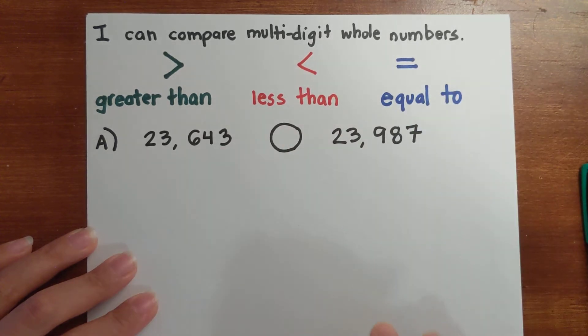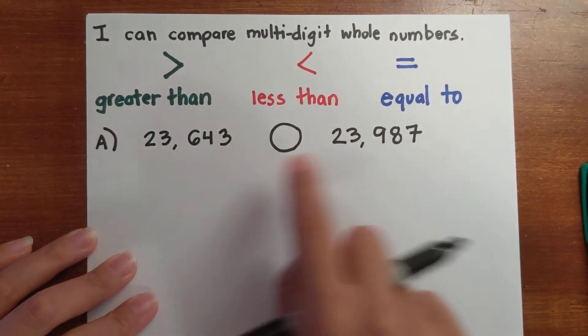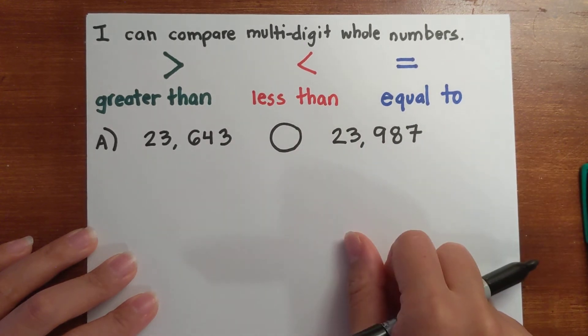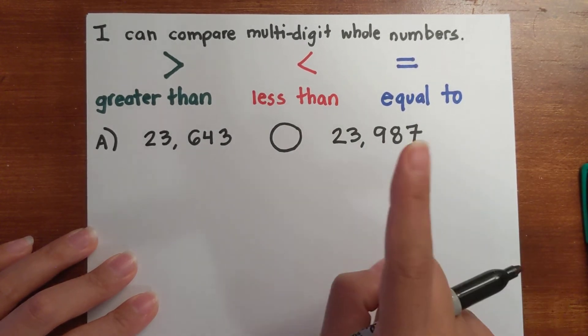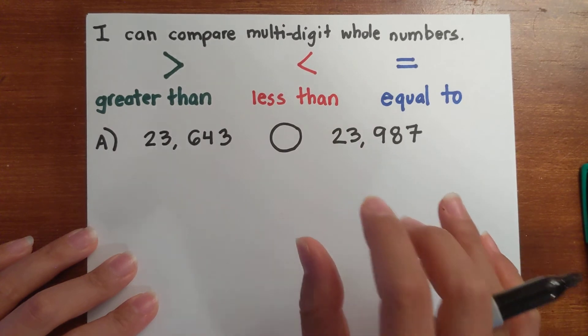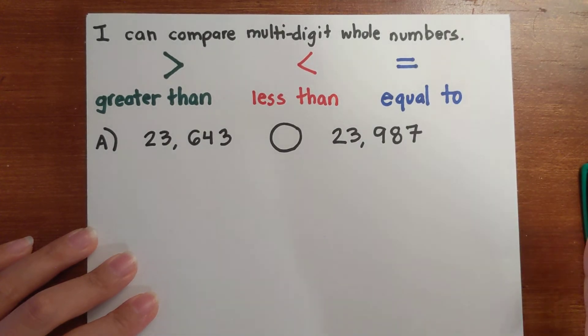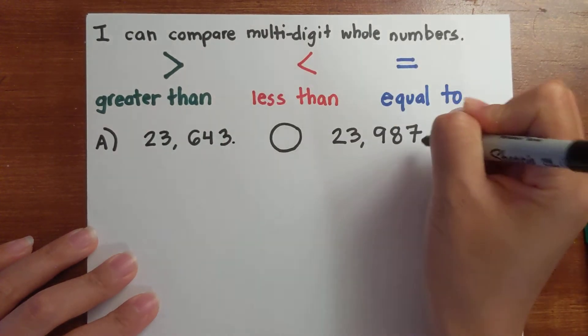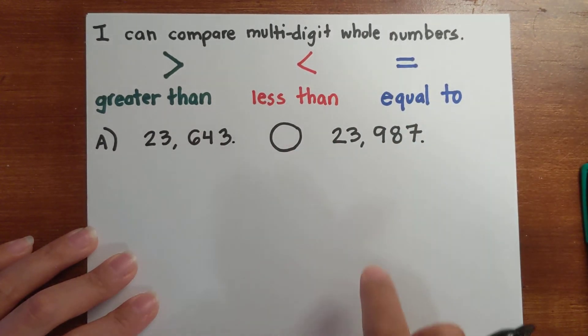Now, using whole numbers, we lucked out here because they have the same number of digits in each whole number, but that's not always the case. So the number one thing when you're comparing whole numbers is you want to line up each place value. I'm going to add on the decimal to each number so you can see where the place values line up.